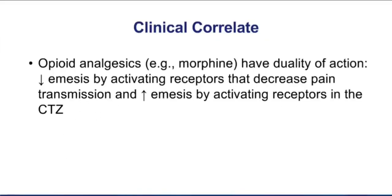In the margin is a clinical correlate about opioids. Opioids have a direct emetic effect, but also the fact that opioids stop pain — and pain is a stimulus for causing nausea and vomiting — means there's really a dual action for opioids. They can directly cause emesis, or indirectly by stopping pain, they can have an anti-emetic effect.